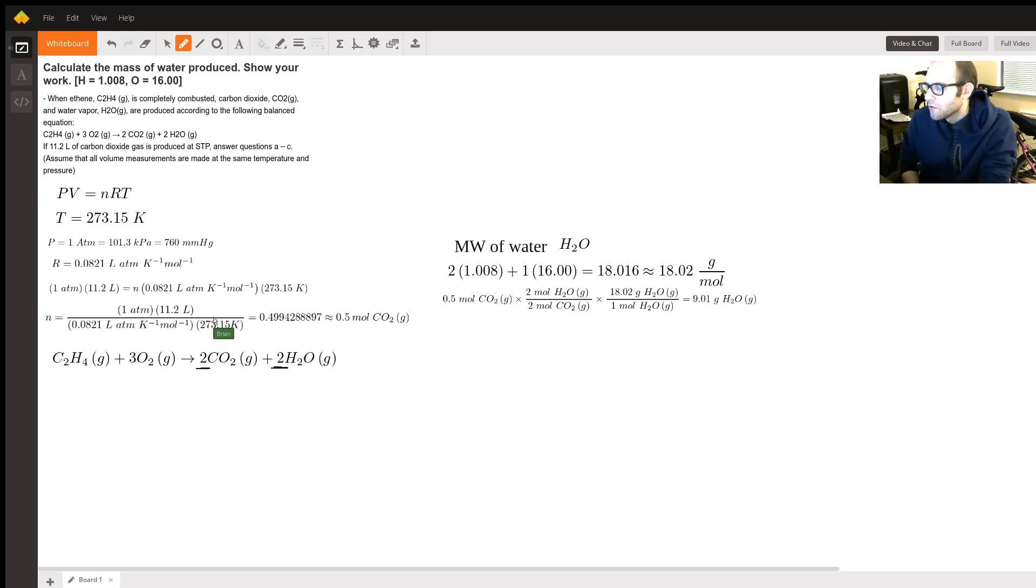So the next tool we have is now we know for a fact that 0.5 moles of CO2 gas has been formed. So we're going to go back to the balanced equation and we will see that for every two moles of carbon dioxide gas formed, we have two moles of water vapor formed.